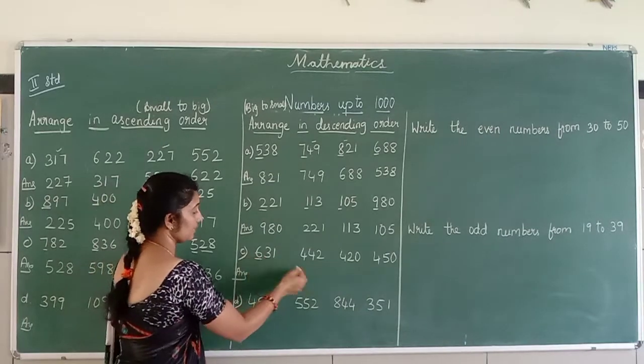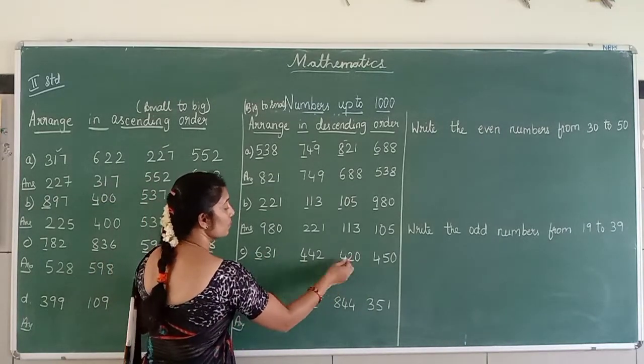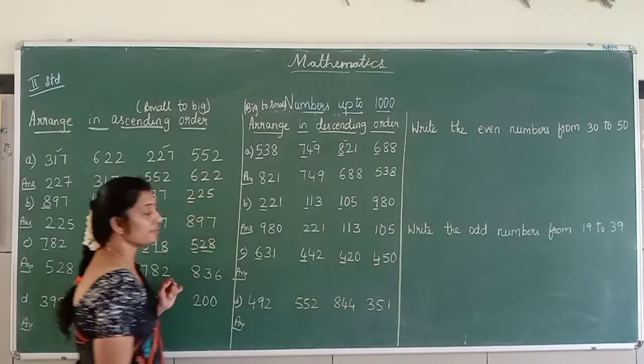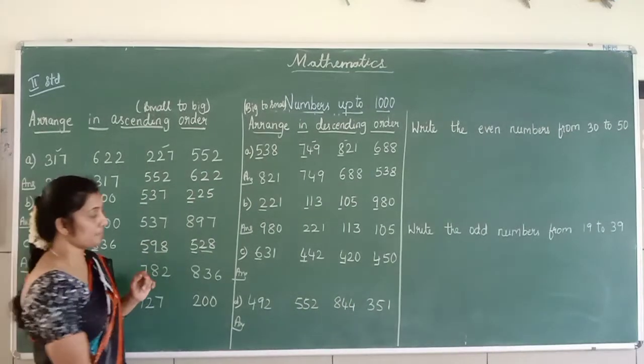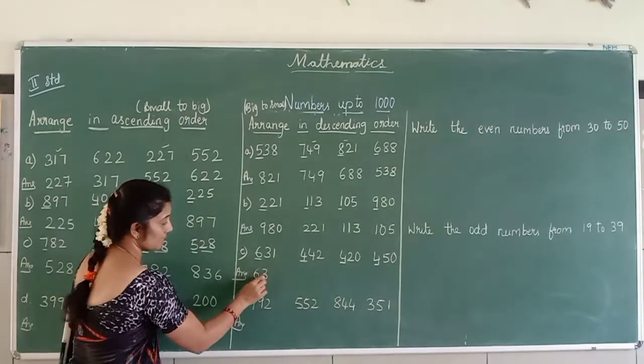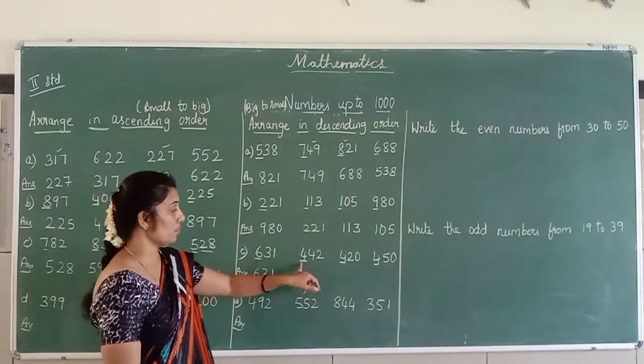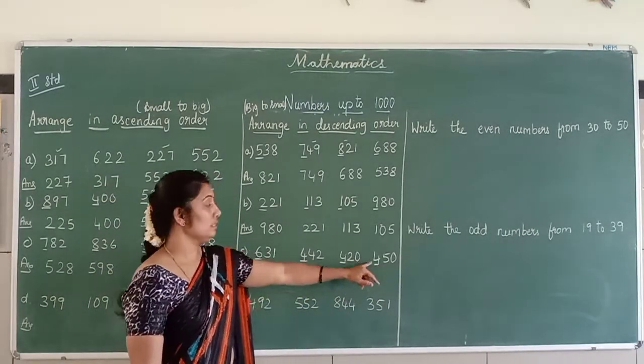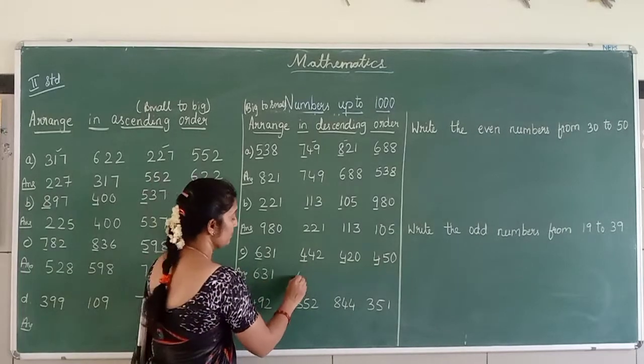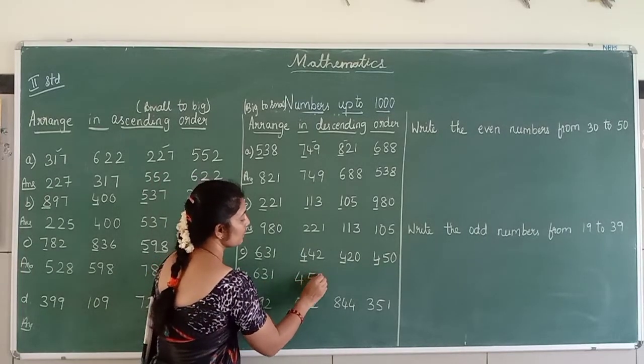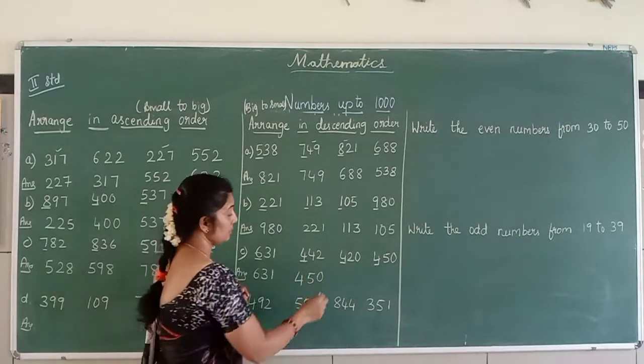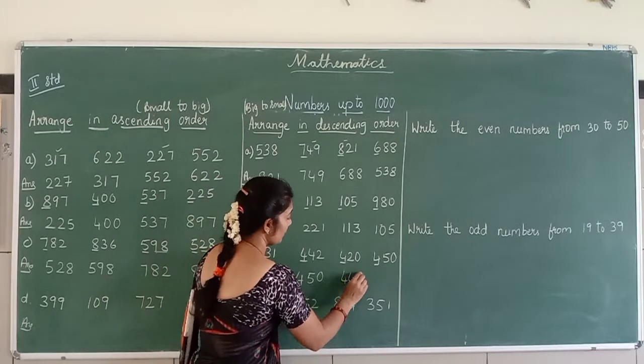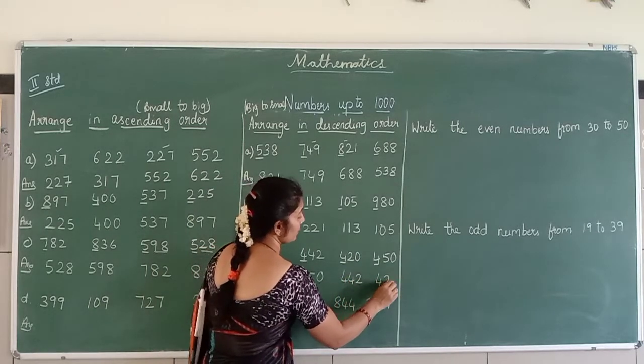The next are 631, 442, 420, 450. So which is the bigger number? It is 631 as it is. Here 442, 420, 450 is there. So which is, 450 is bigger or 442 is bigger? 450 is bigger. After 450, 442, and it is 420.